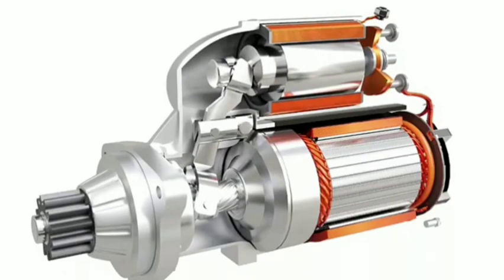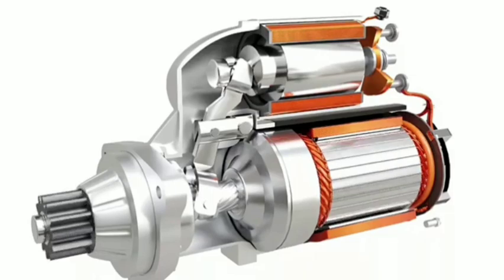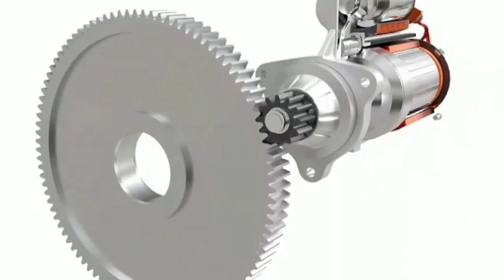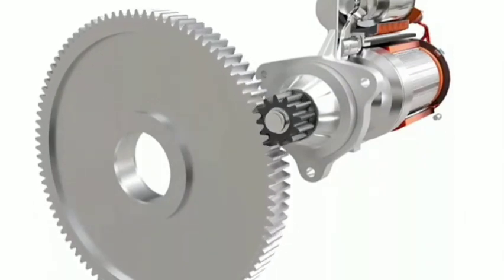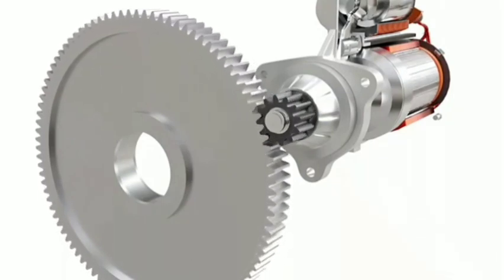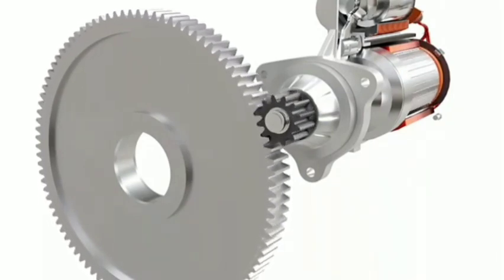As the pinion and flywheel are properly meshed, the contactor switch closes and the motor spins. We can observe that the pinion is considerably small compared to the flywheel. The gear ratio of the flywheel and pinion is generally from 15:1 to 20:1. However, the high torque obtained from this gear reduction is still insufficient to crank the engine.